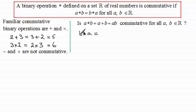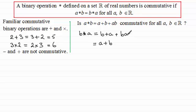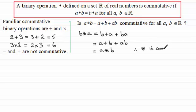If we do b star a, according to the rule we add the two elements first: b plus a, then add the product of them: b times a. We know addition is commutative, so b plus a equals a plus b, and multiplication is commutative, so ba equals ab. Therefore b star a equals a plus b plus ab, which is exactly the result of a star b. So the operation star is commutative.